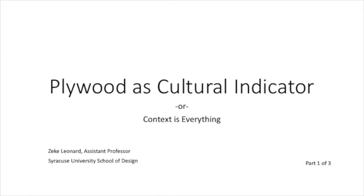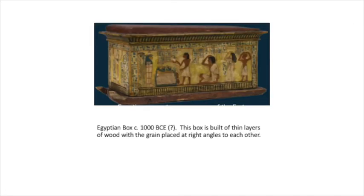We're talking in these videos about plywood as a material, but more importantly, we're talking about plywood as a cultural indicator. For the purposes of this video, I'm defining plywood as thin sheets of wood that are glued together with their grains rotated 90 degrees from each other.